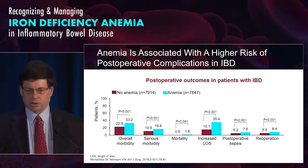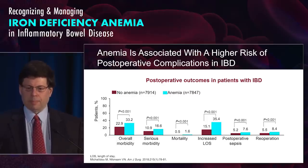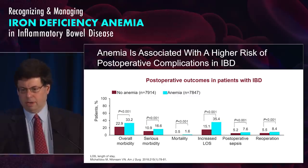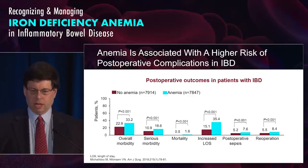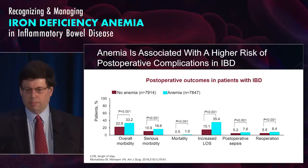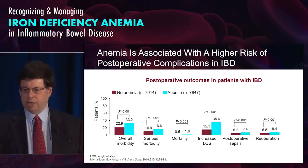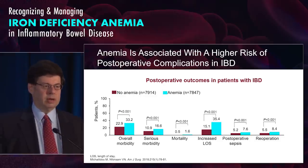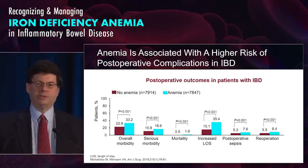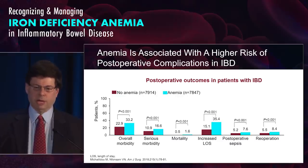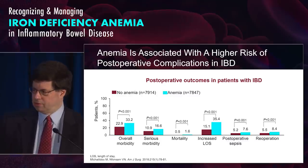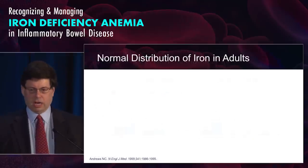Also postoperatively, if we look at post-op complications in IBD, those that had anemia versus no anemia showed higher morbidity, serious morbidity, mortality, length of stay, post-op sepsis, and reoperation rates. So these are factors we often look at — it's a marker suggesting these are potential complications, and you should think of this as a complication of IBD.